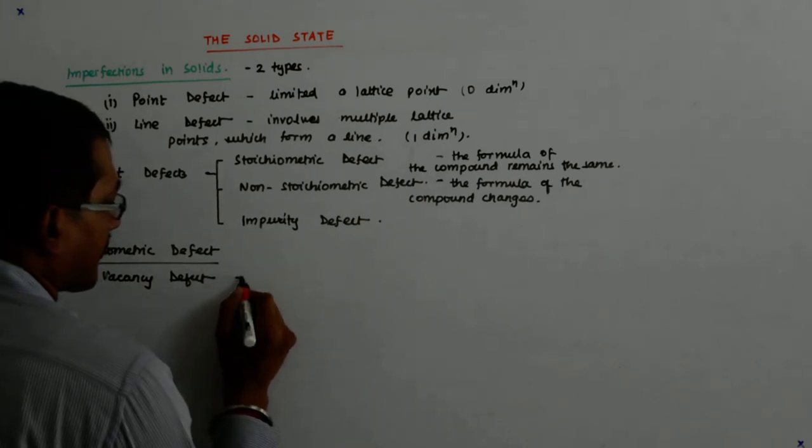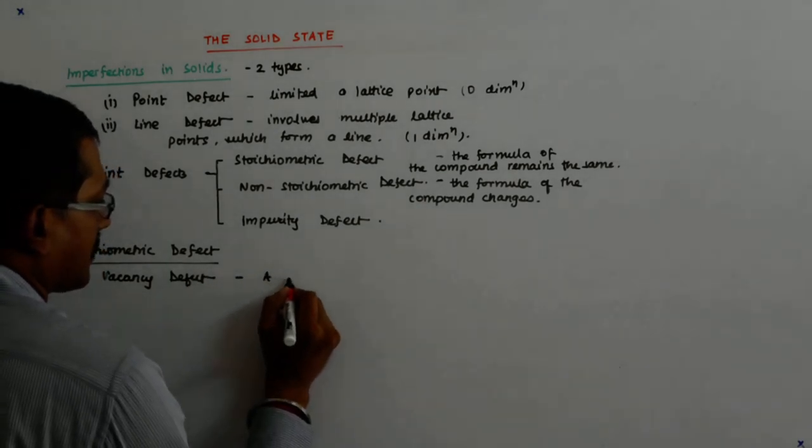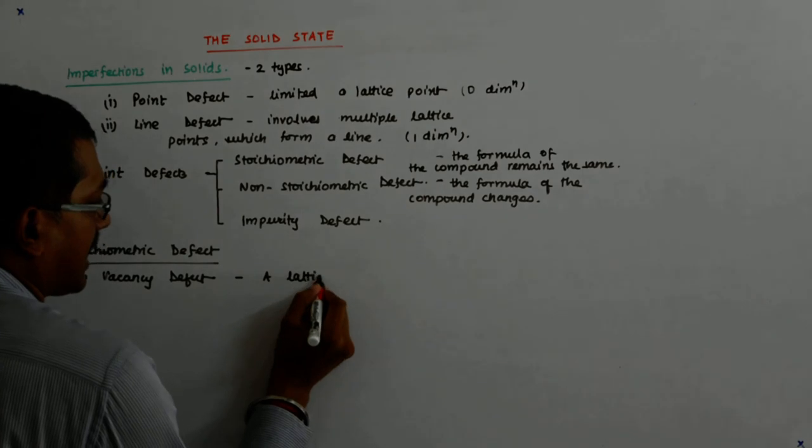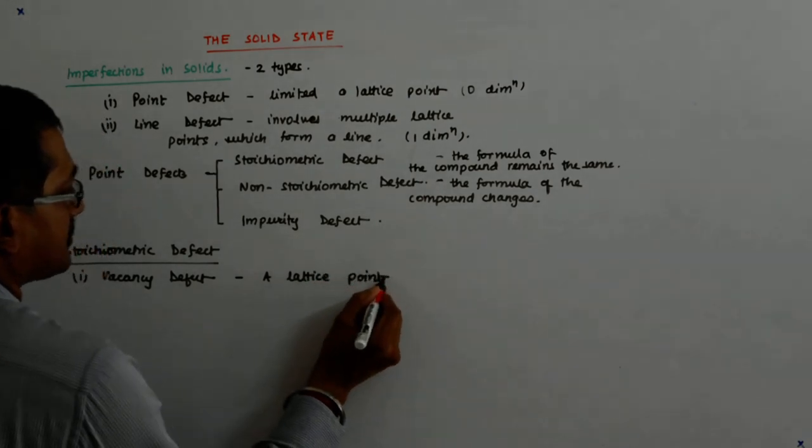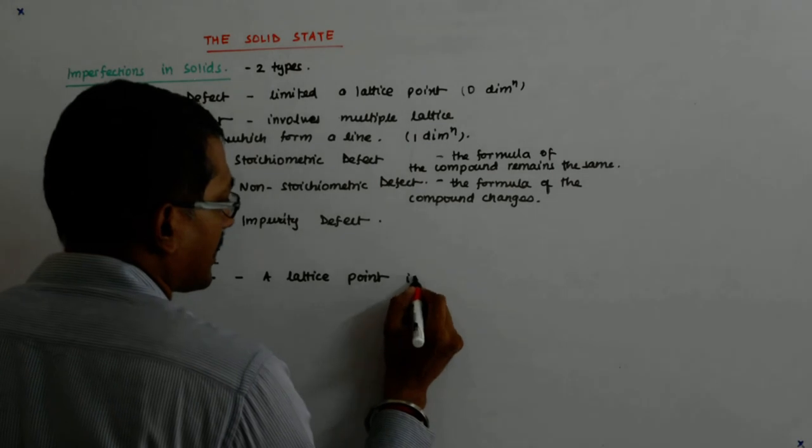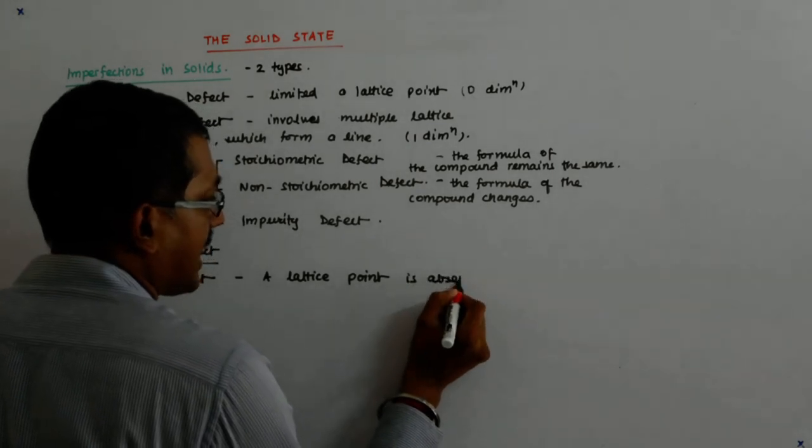What does it mean? A lattice point is absent from the position where it should have been found.